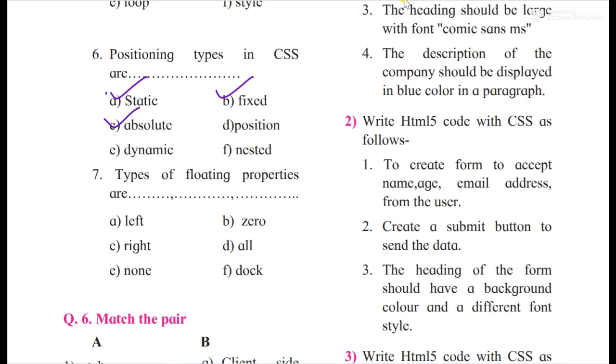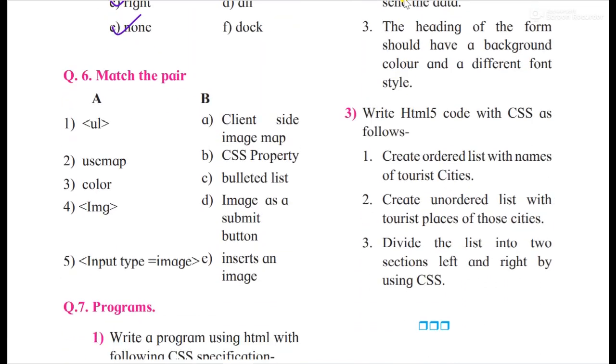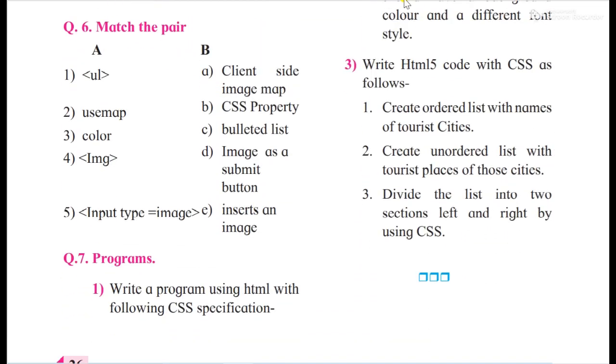Attributes used with audio tag are autoplay, loop, and controls. The rest of these all are not. Then CSS types are dash, dash, and it's simple, internal, external, and inline.